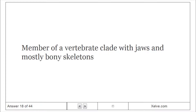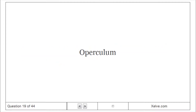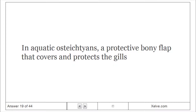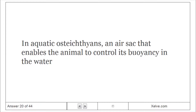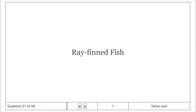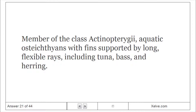Osteichthyan: Member of a vertebrate clade with jaws and mostly bony skeletons. Operculum: In aquatic osteichthyans, a protective bony flap that covers and protects the gills. Air sac: In aquatic osteichthyans, an air sac that enables the animal to control its buoyancy in the water. Ray-finned fish: Osteichthyans with fins supported by long, flexible rays, including tuna, bass, and herring.